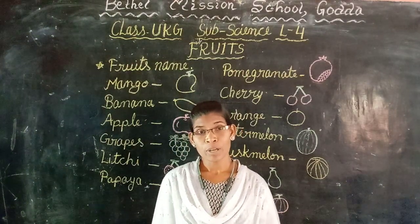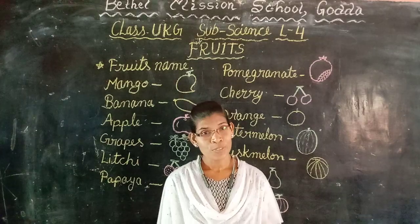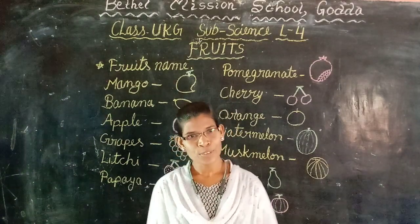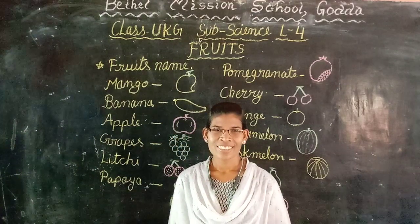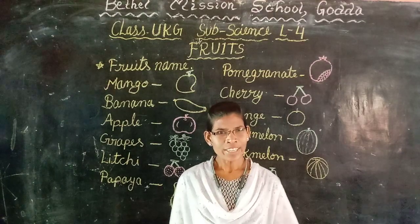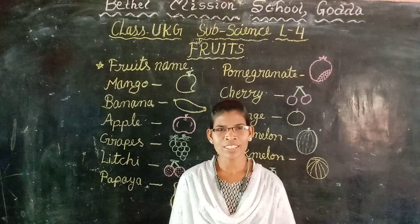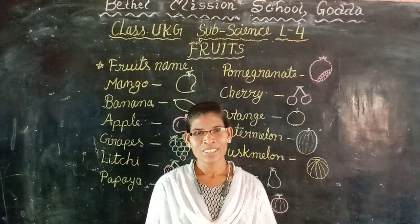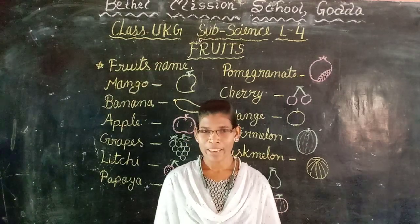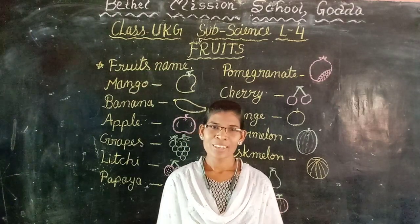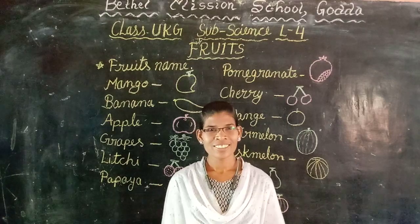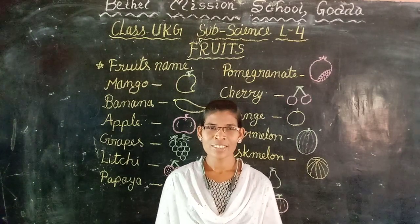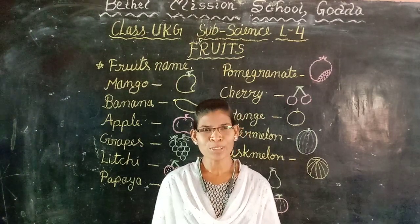About what are we going to learn? About fruits. Children, have you eaten fruits? Different kinds of fruits you have eaten, yes? You have eaten mango, apple, banana, cherry, litchi, pomegranate — so many fruits you have eaten.